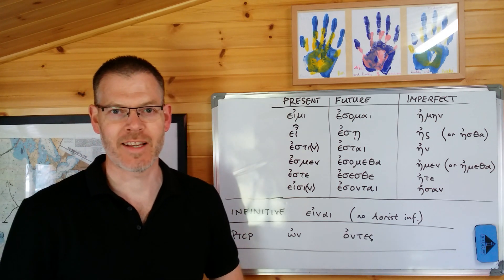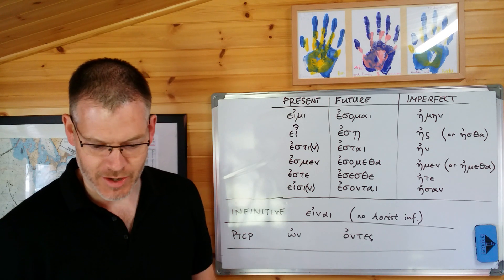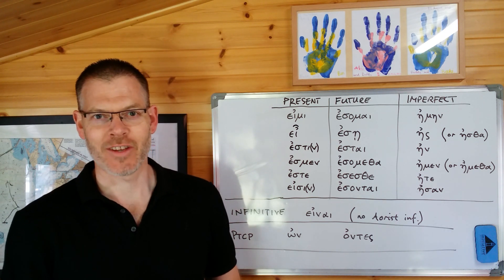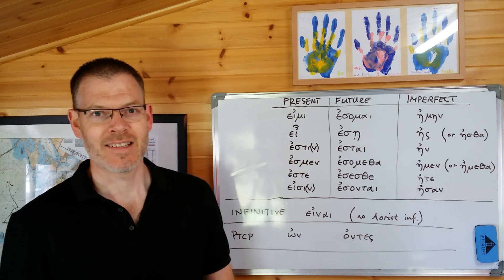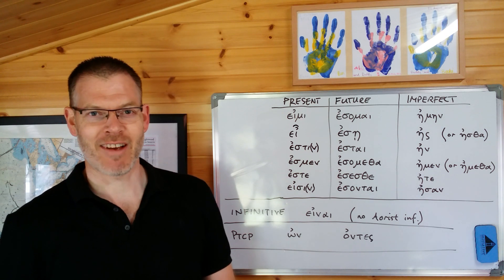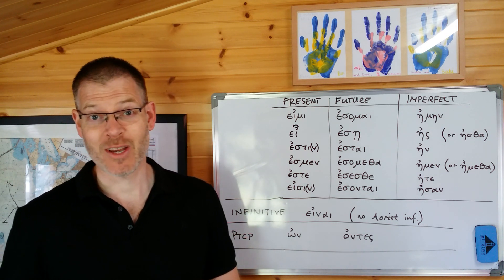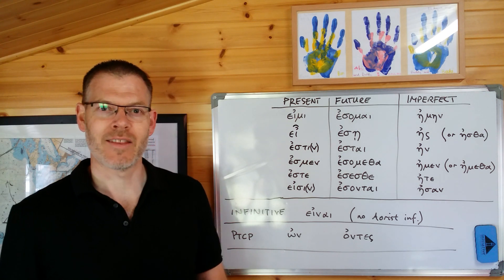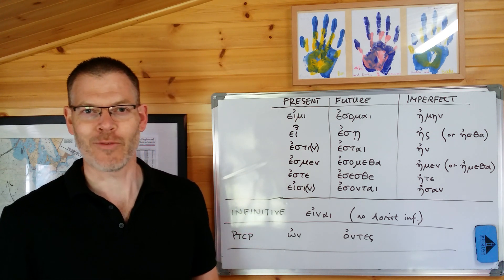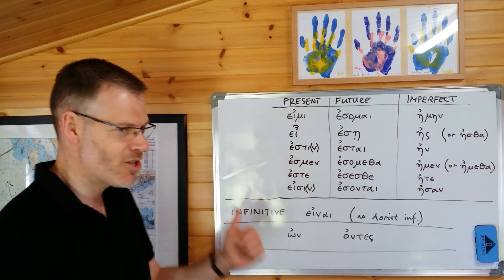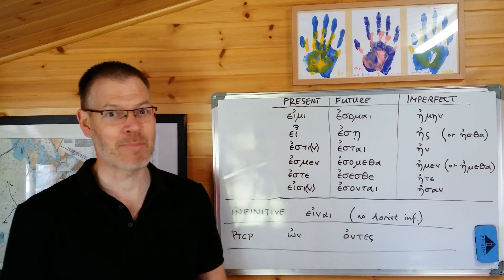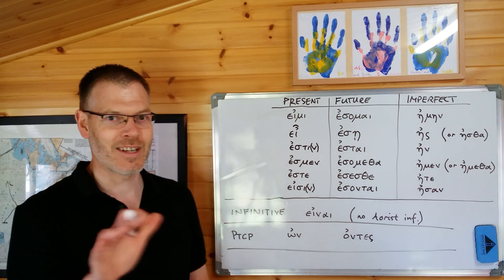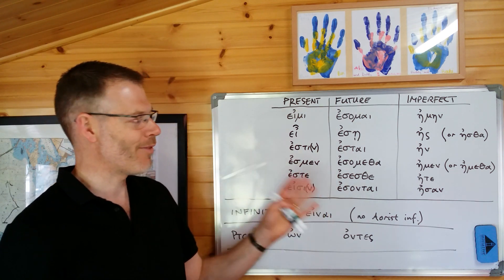Welcome back. We are looking today at Jeremy Duff, Elements of New Testament Greek, section 8.2. We're looking at the verb to be. And in every language that you can possibly imagine, the verb to be tends to be highly irregular. I'm afraid there's no way of getting around this. I think it's because, firstly, it gets used frequently and things that get used change a lot with use to make them easier to say. It's also perhaps because the idea of being is somewhat different philosophically from other actions.